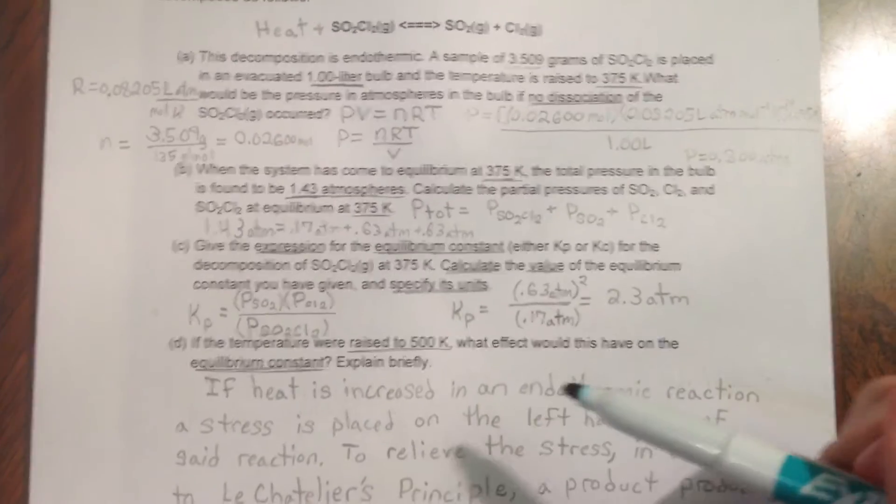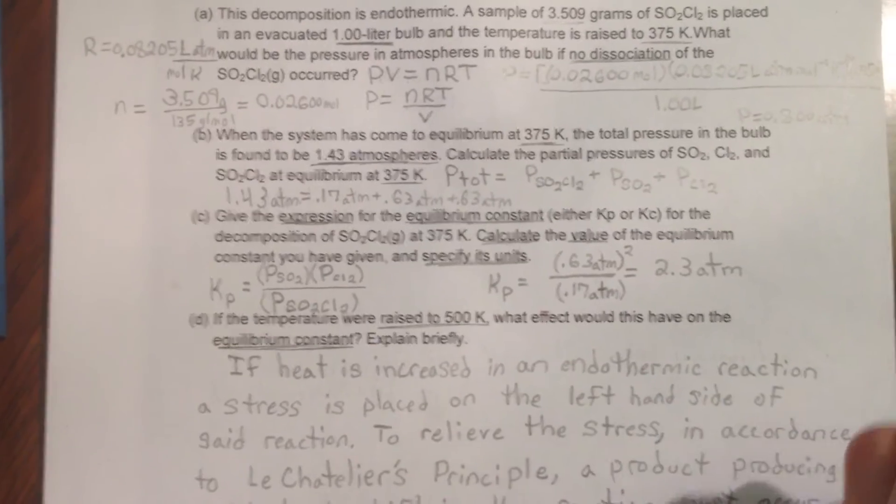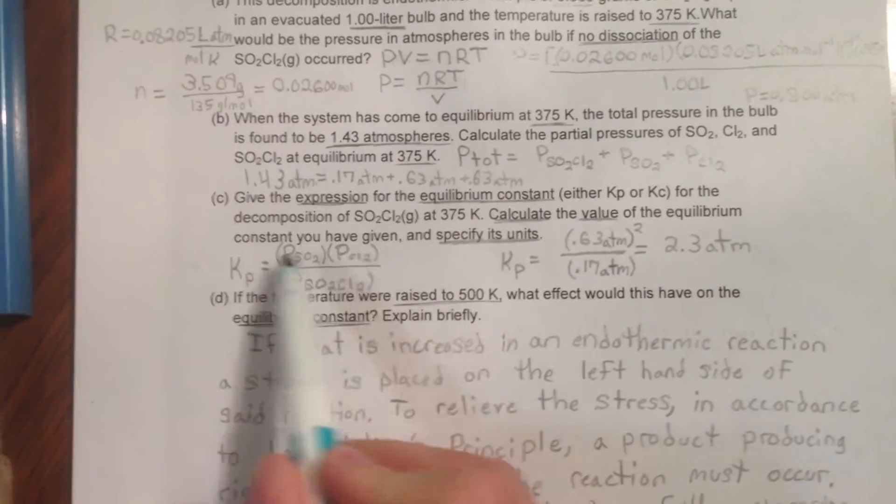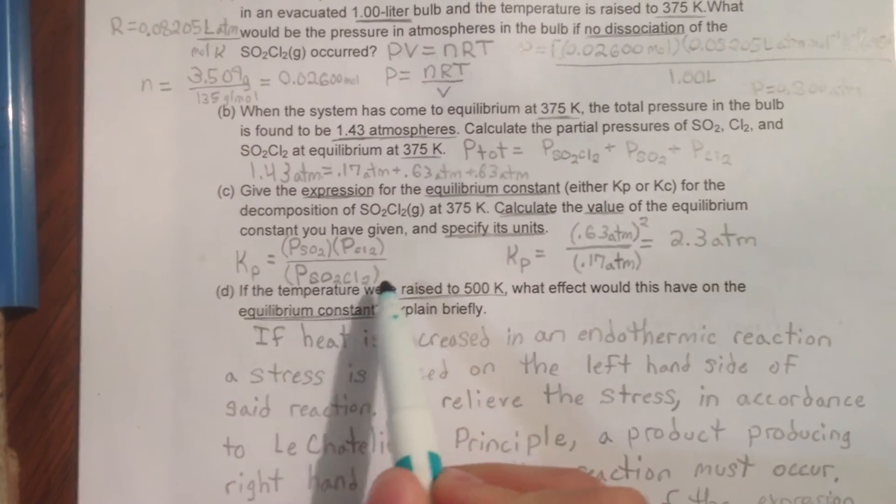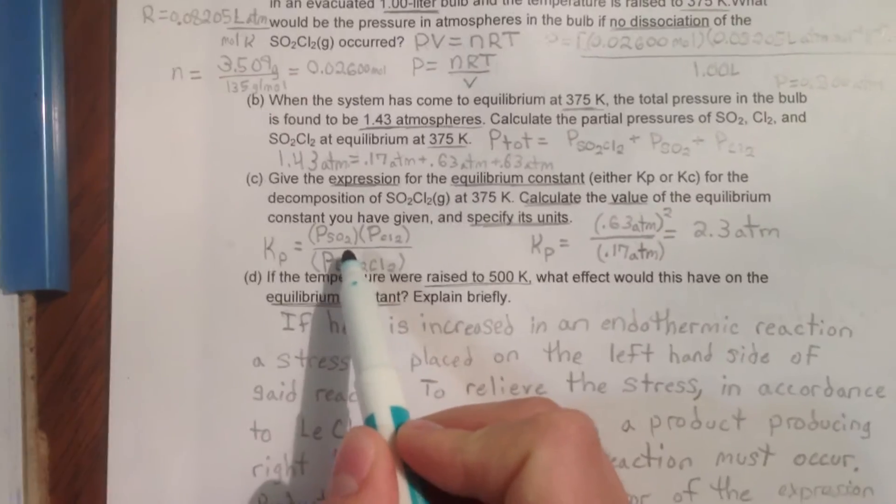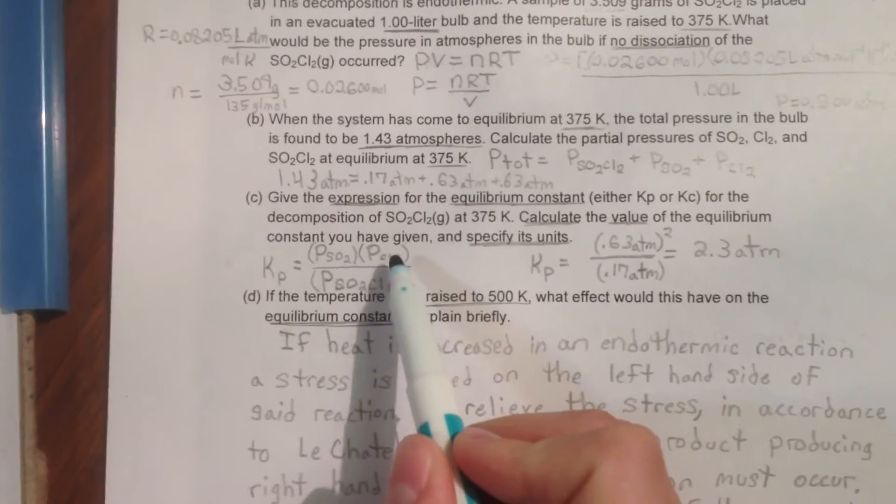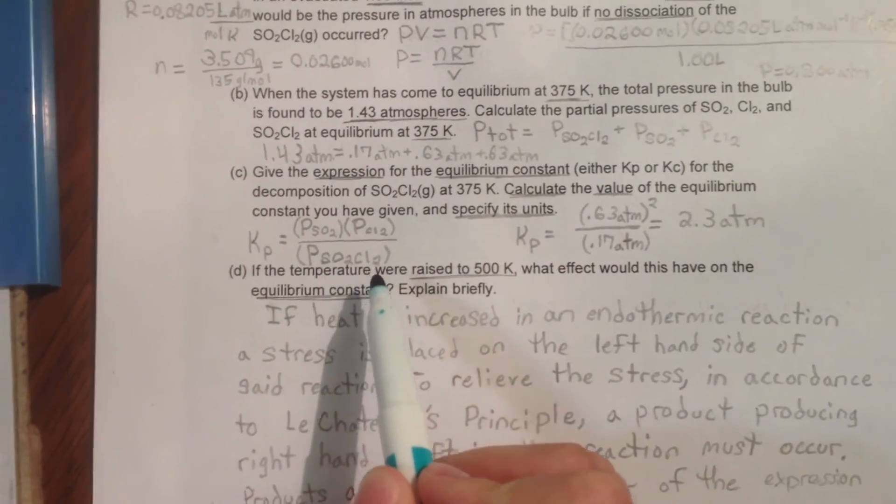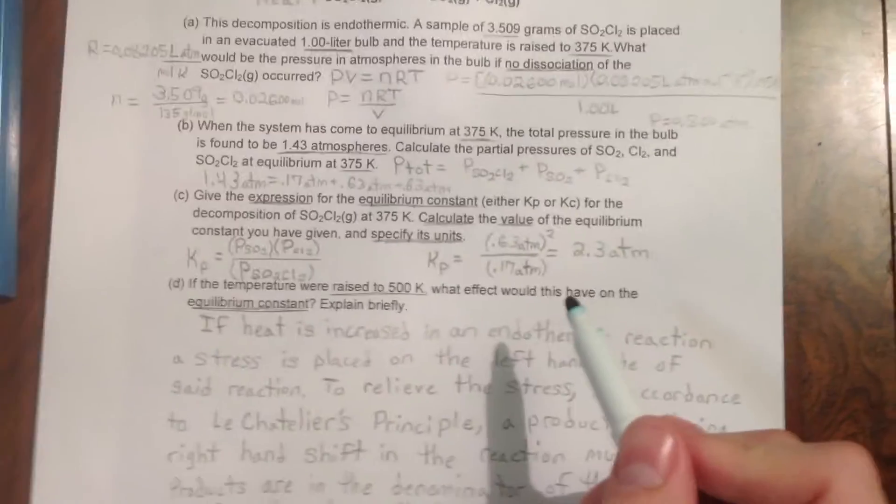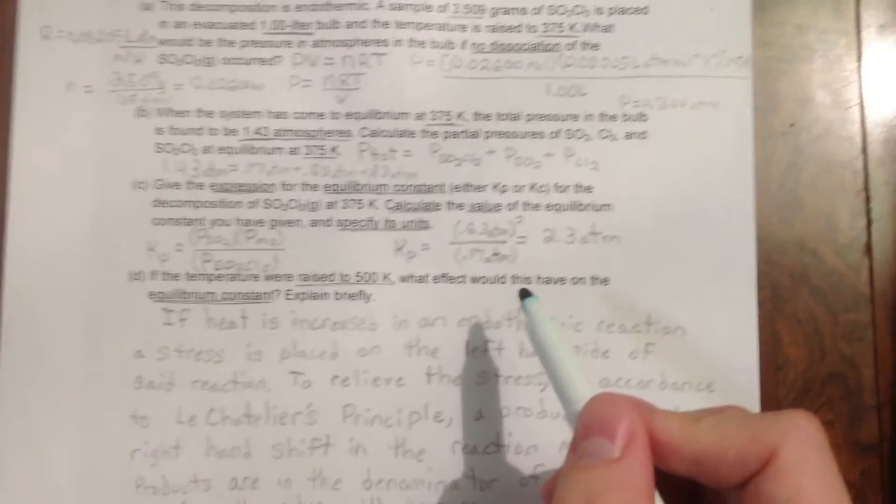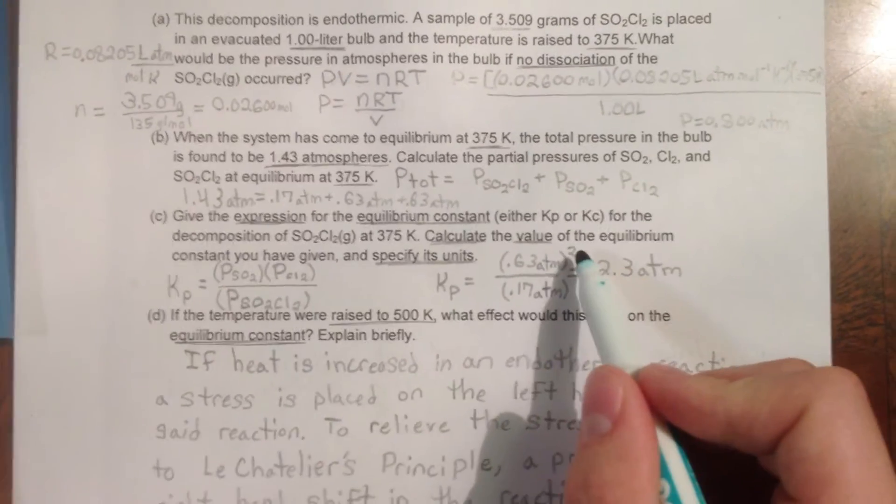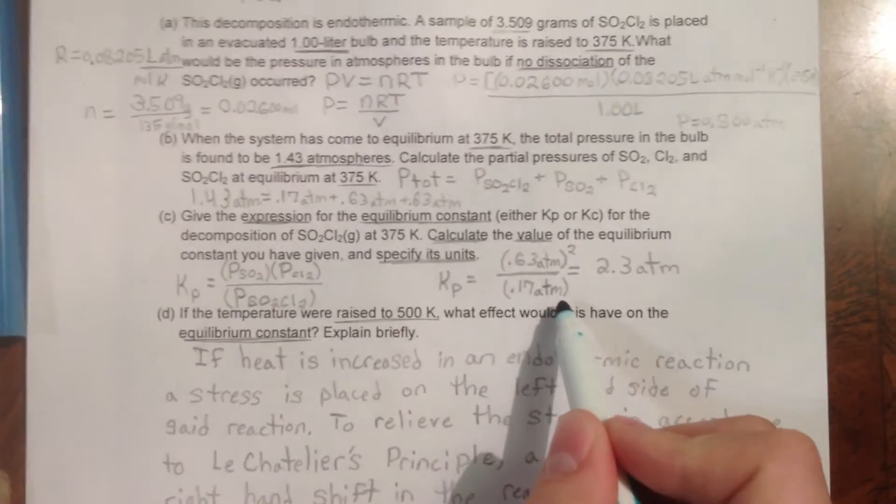We will find Kp because we already have the partial pressures needed for the expression Kp equals products over reactants. Which would be Kp equals PSO2 multiplied by PCl2 all over the P of SO2Cl2. If we fill the expression in with our previous calculations, we have Kp equals 0.63 atmospheres squared over 0.17 atmospheres.